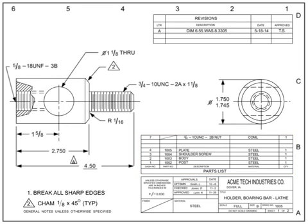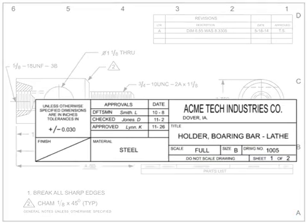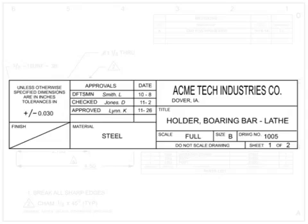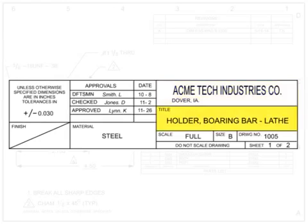The first place to look for information about a blueprint is on its title block. Most title blocks are located in the lower right-hand corner of the drawing. Although the title block information can vary by company, certain information is basic. At a minimum, it contains a company's name and usually includes its logo and address. The drawing title block can also be called the noun or nomenclature — a short description of what the item depicted or the name of the part is typically located in this block.